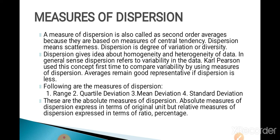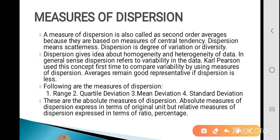In previous lectures we already learned the different measures of central tendency like arithmetic mean, geometric mean, harmonic mean, median, mode, quartile, deciles and percentiles. Measures of central tendency is called the first order averages, and the measures of dispersion is called the second order averages because they are totally based on the measures of central tendency.